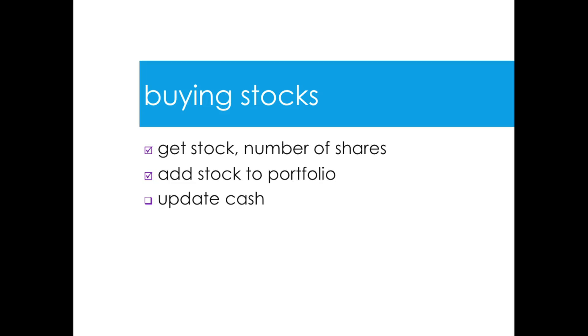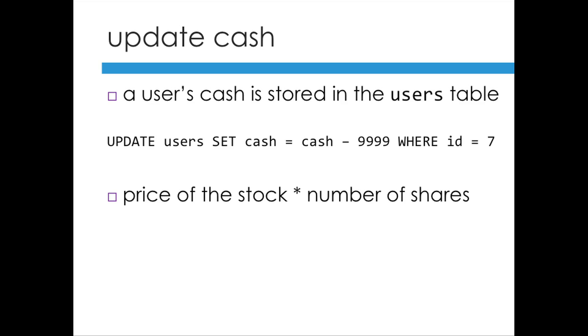Now that we've updated the portfolio table, we'll want to update the user's cash in the users table — basically subtracting a certain amount from cash. Presumably it's going to be cash equals cash minus a certain amount. To update the cash, you run the query UPDATE users, then SET the cash column to cash minus the amount, only where the user's ID matches. In this case you don't want to subtract a fixed amount — you want to subtract the current price of the stock multiplied by the number of shares that they're buying.